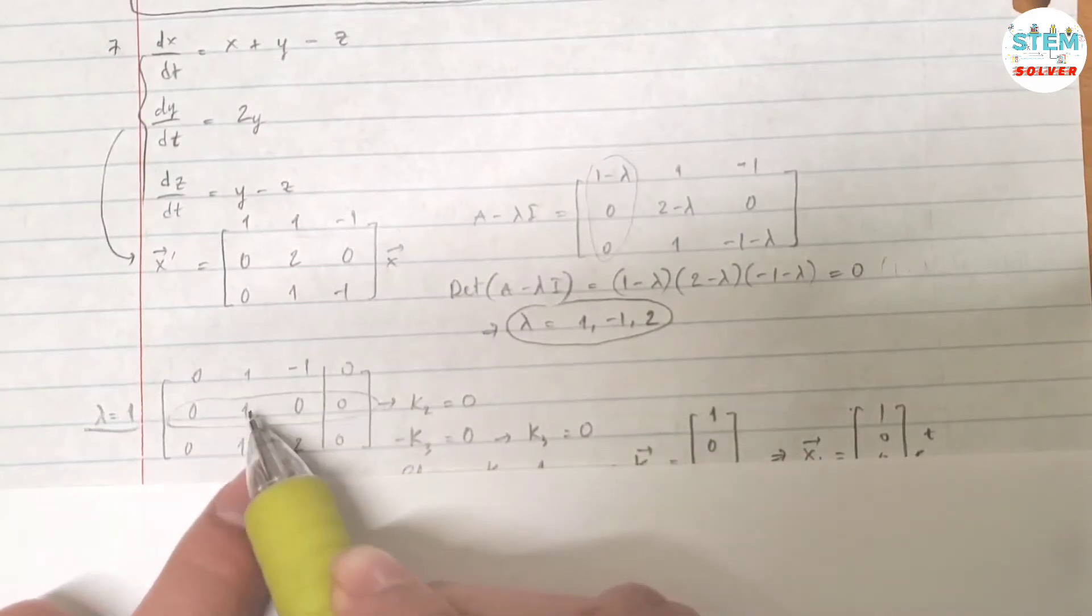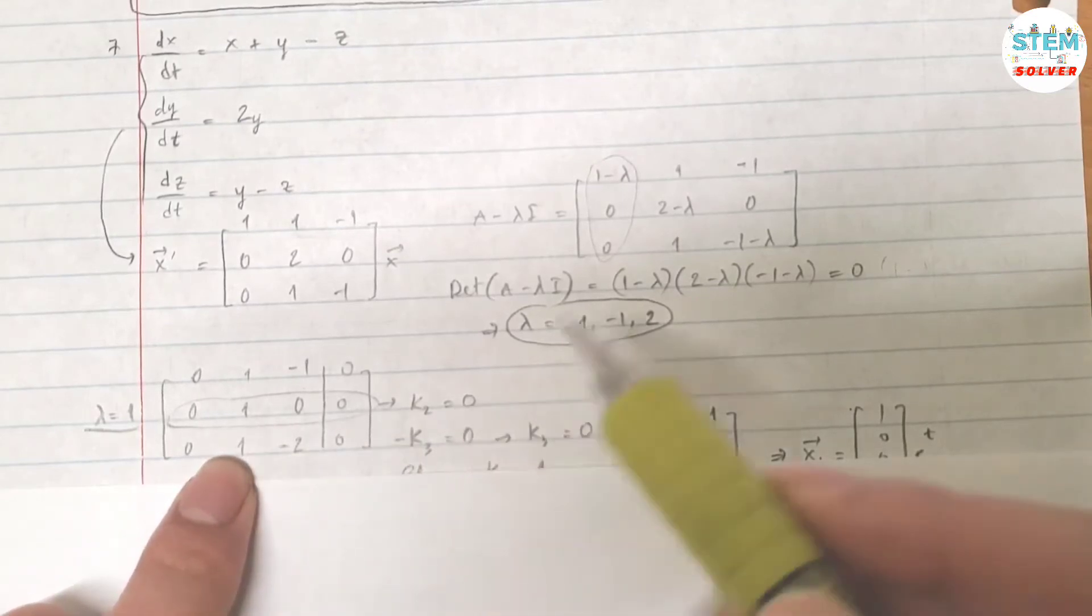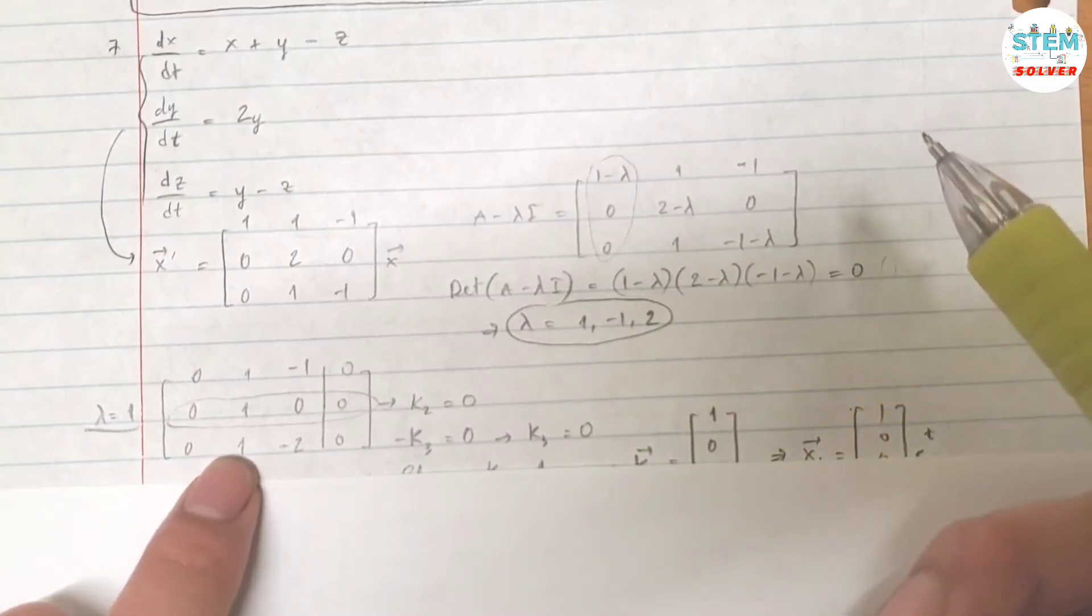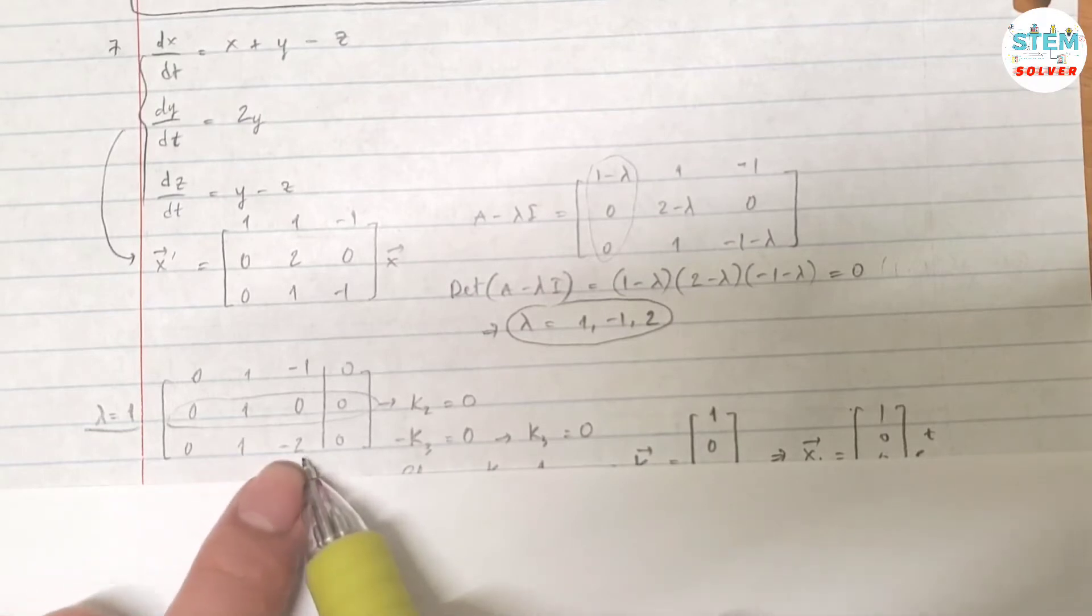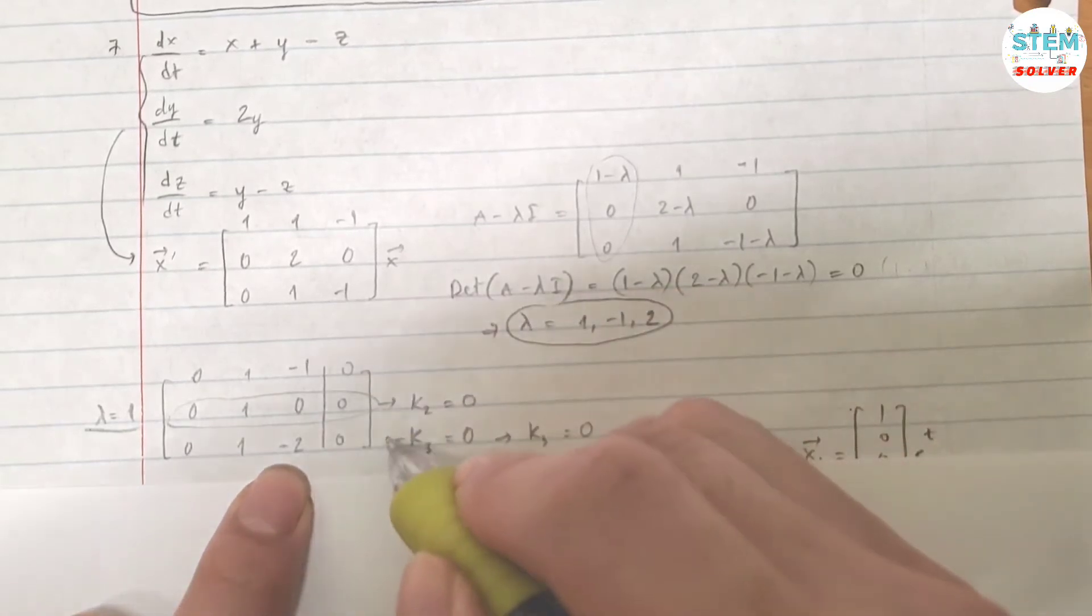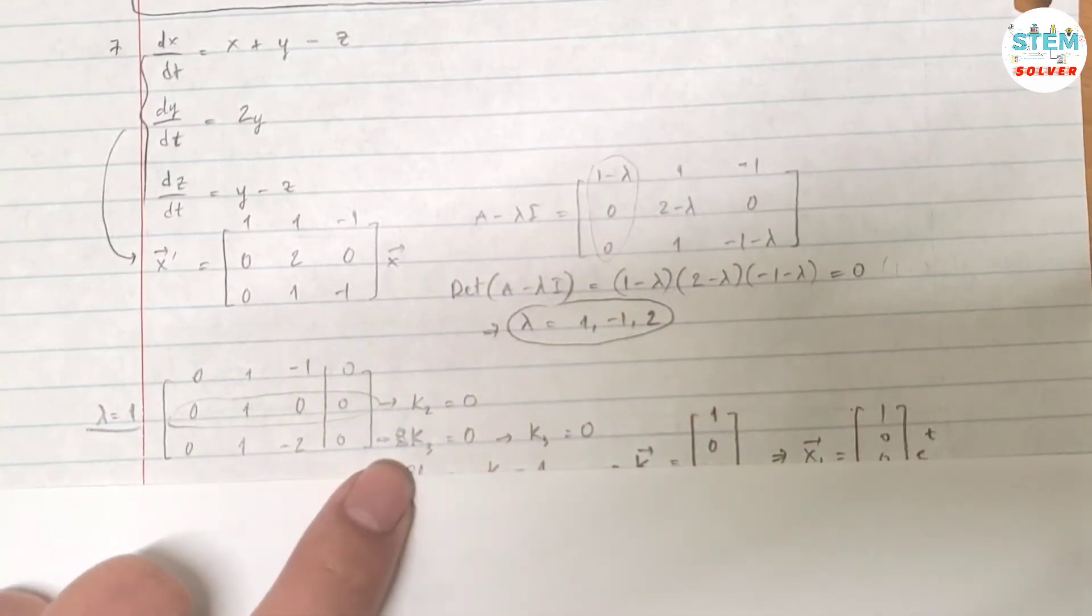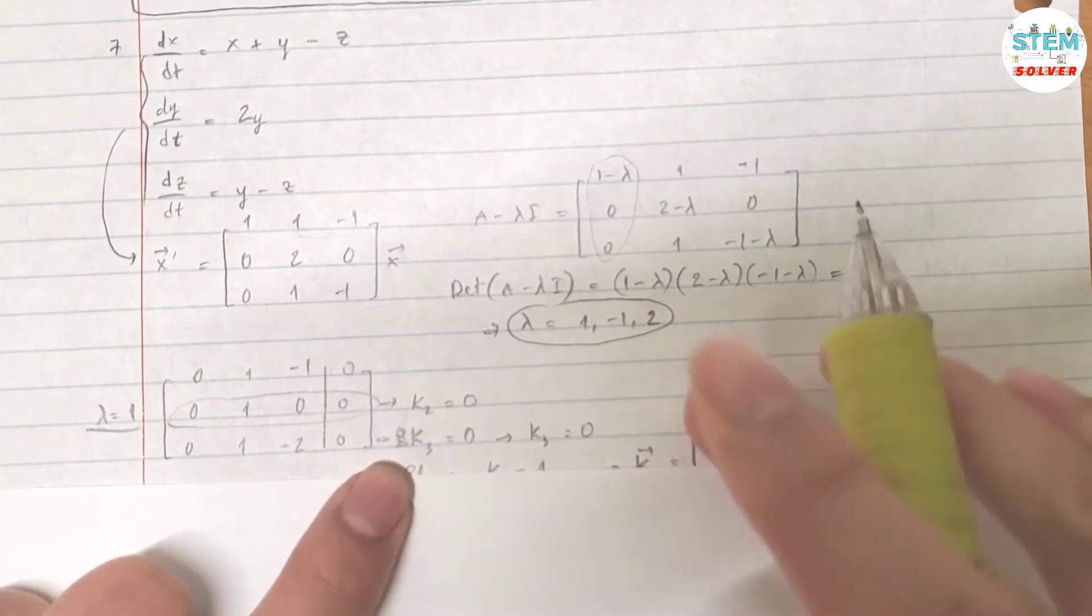I'm gonna use the second equation because this has 0, 1, 0, 0, so that means that k2 equals 0. Now I'm gonna use this equation. I have k2 minus 2k3 equals 0, but since k2 equals 0, I have negative 2k3 equals 0.